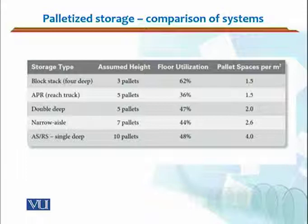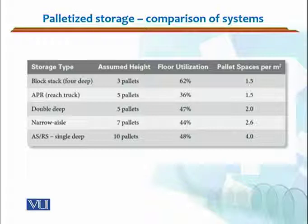For reach trucks, which are used for narrower aisles, the assumed height for APR would be 5 pallets. The floor utilization was just 36%, although the pallet takes the same space. For maneuvering of the reach trucks, we need more space.